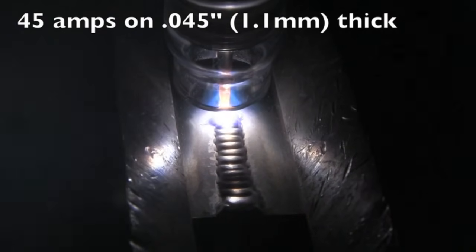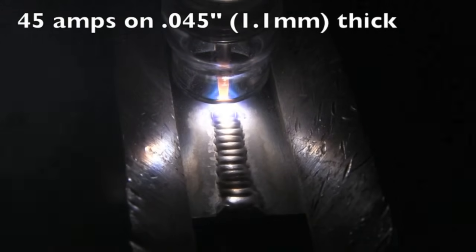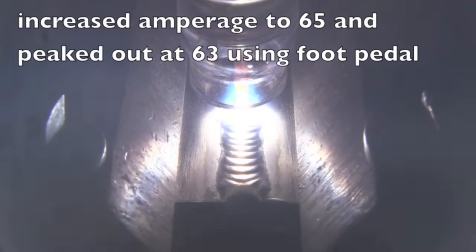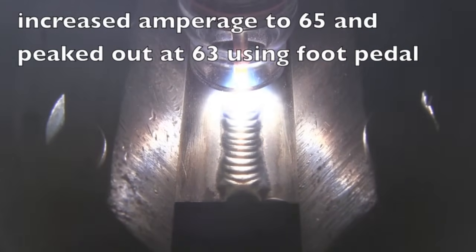This is an example: 45 amps on 45 thousandths thick metal, and you can see it's very cold—it's just laying on top. Had to increase it to 65 and actually peaked out around 63 using a foot pedal, and that was about right.